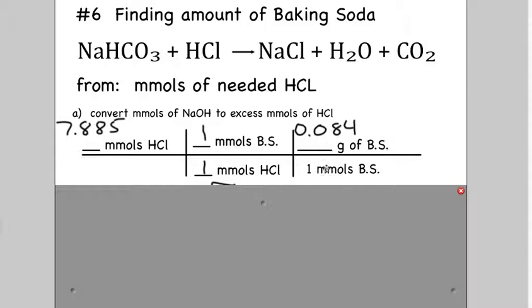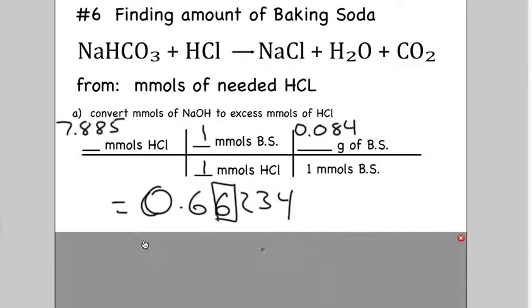So our last step is to convert millimoles of baking soda to grams. And because 1 millimole is 0.084 grams, we get 0.66234. And we're going to round to 2 sig figs based off of some previous measurements.